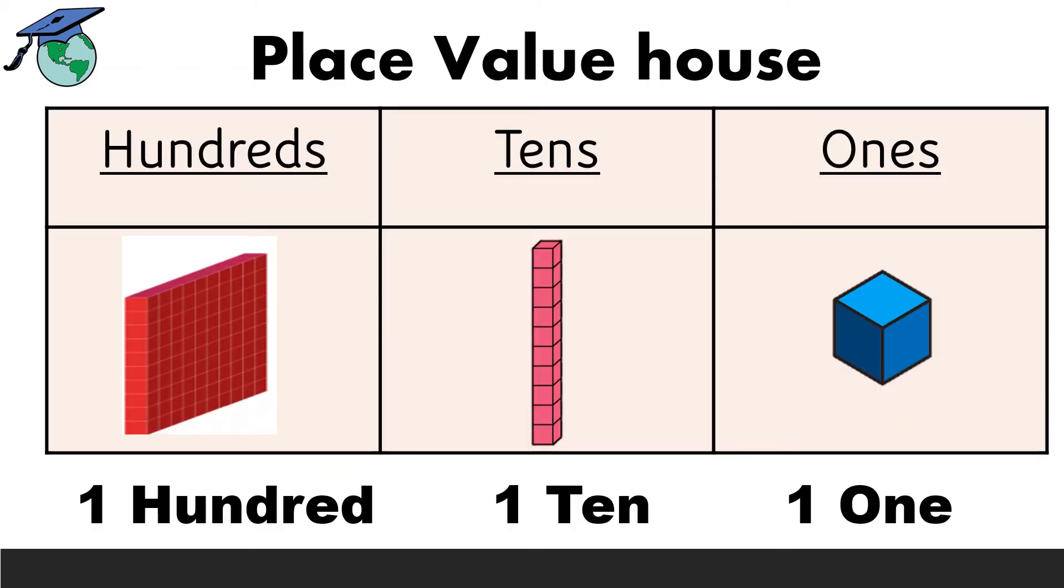Place value house. This is one's house, this is ten's house, and this is the hundred's house. The one's house is in blue color. There is just one block of ones. And in the tens house, there is only a group of 10. In the hundreds, you have 10 groups of tens. So, it will be 100.